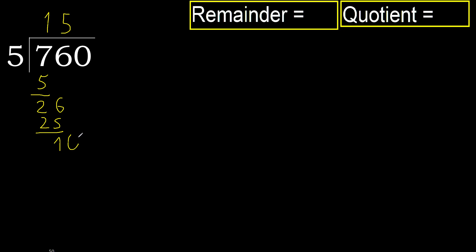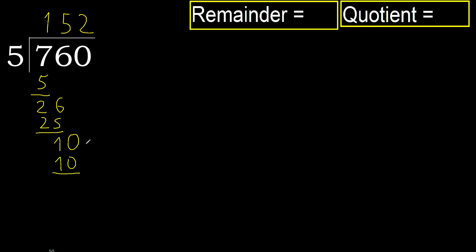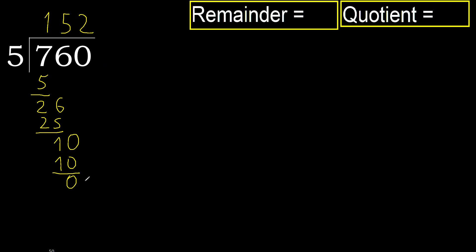Next, 10. 5 multiplied by 2 is 10 — it is not greater. Subtract. Next, that is not a number, therefore finish it.